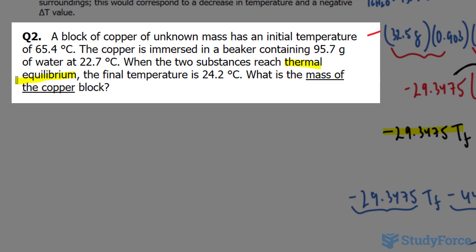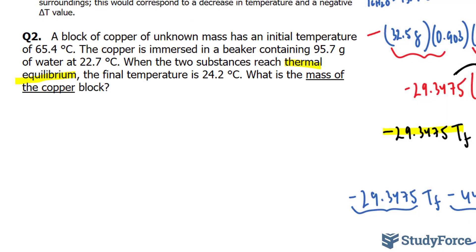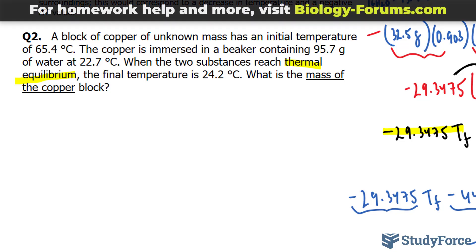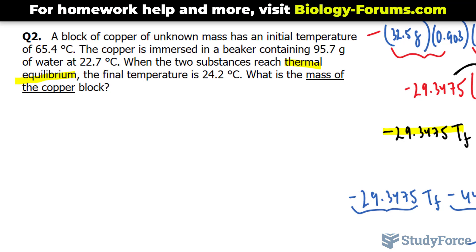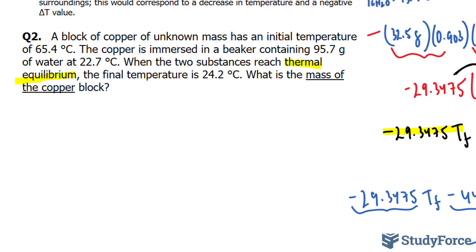The final temperature is 24.7 degrees Celsius. What is the mass of copper block? So the copper goes from being 65.4 and then submerged into 22.7 degrees Celsius. It's going from hot to cold, it's technically losing its heat.